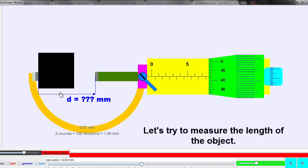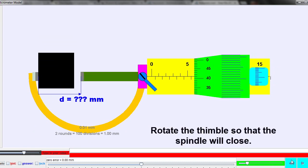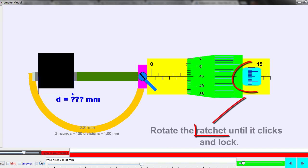Now that we have computed the LC, let's try to measure the length of an object. So we rotate the thimble, then close the spindle lightly. Rotate the ratchet until it clicks.